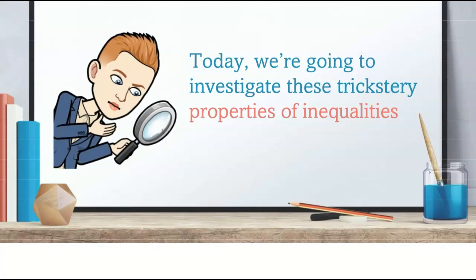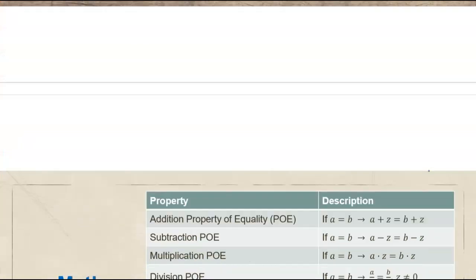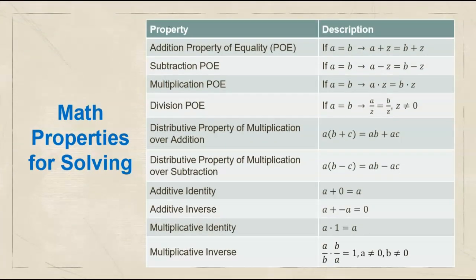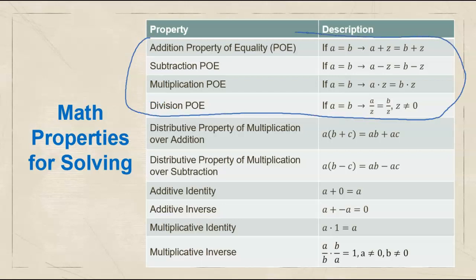Today we are going to investigate properties of inequalities — figure out which ones behave the same and which ones behave differently. Just a reminder, our properties of equality were: we can add the same thing to both sides, subtract the same thing from both sides, multiply by the same, and divide by the same. All of those are valid for equalities. But the question is — are they valid for inequalities?